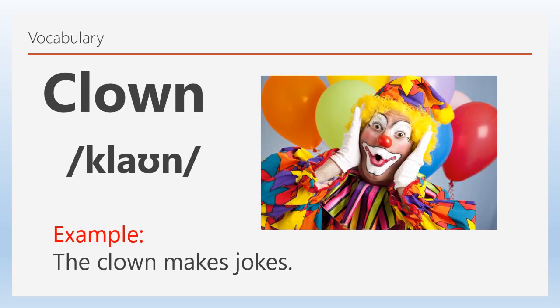The next word is clown. This has the 'ah' sound and the 'oo' sound. When you read the word — clown, which means payaso — the first sound is 'claw,' then 'un.' Read together: clown. Make sure you sound both the A and the U. Example: 'The clown makes jokes.' Let's go to the next word.